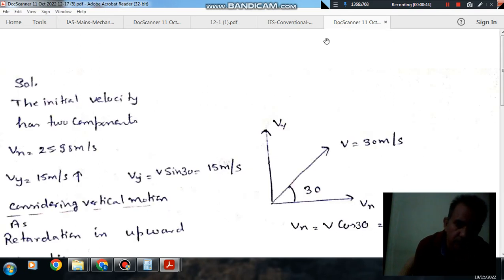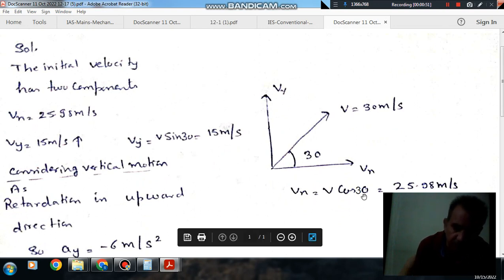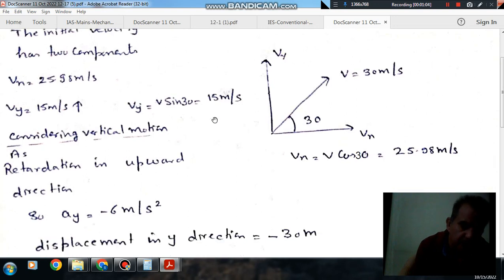The initial velocity of the particle is 30 m per second and its component in horizontal direction is v cos 30, so that is 25.98 m/s, and its component in y direction is v sin 30, so it will be 15 m/s.